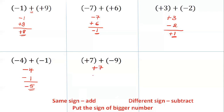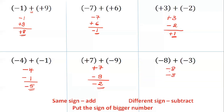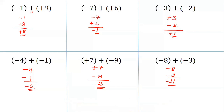Now add plus 7 and minus 9. Write one below the other and be clear about the signs. Subtract and put the sign of the bigger number: the answer is minus 2. Next, minus 8 minus 3 — look at their signs: same. So add: 8 plus 3 is 11. Put the sign of the bigger number, which is minus. Answer: minus 11.